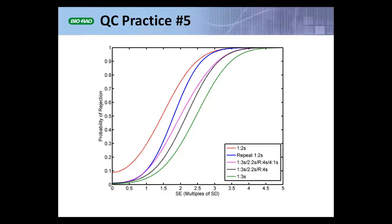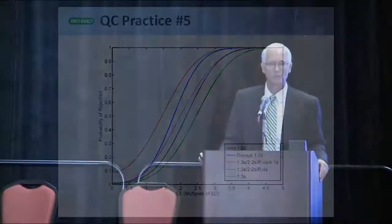The solid blue curve is the repeat 1-2S rule. It has a nice low false rejection rate like the multi-rules and the 1-3S, but it has significantly more error detection ability than either the 1-3S rule or those two multi-rules.